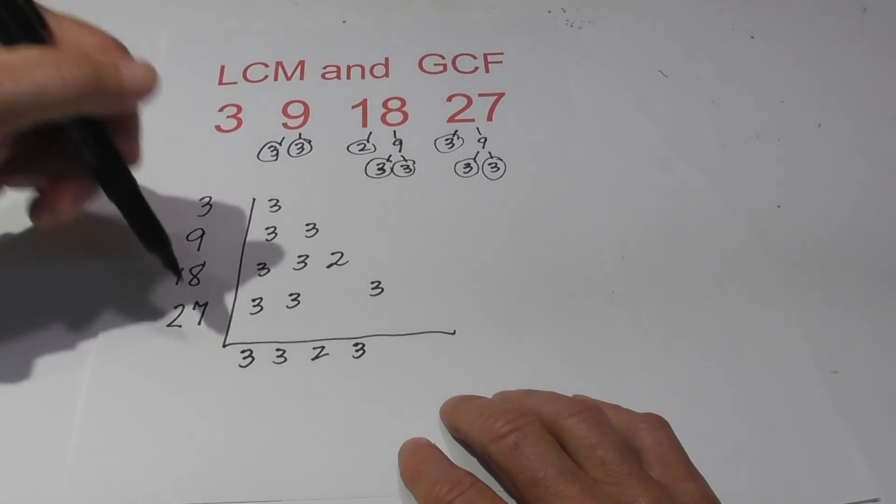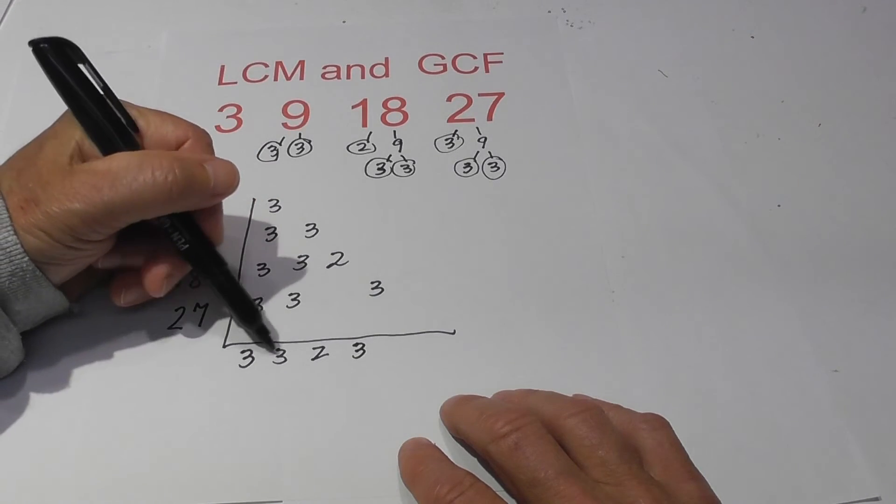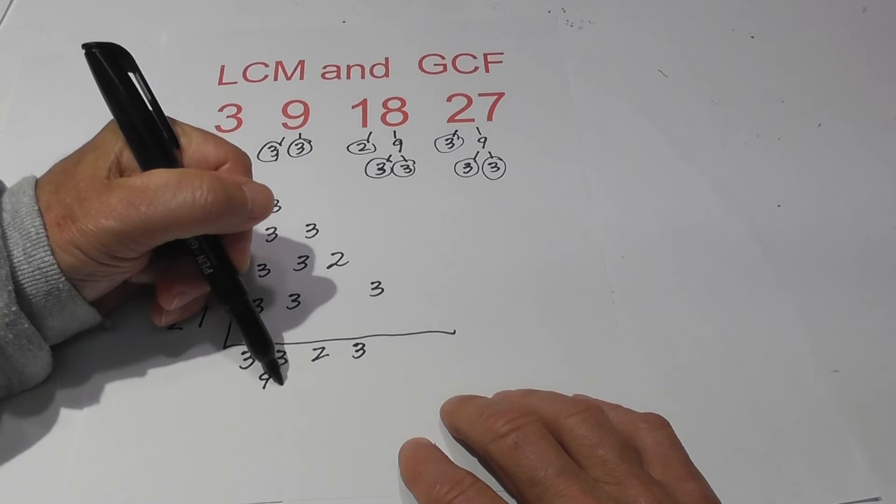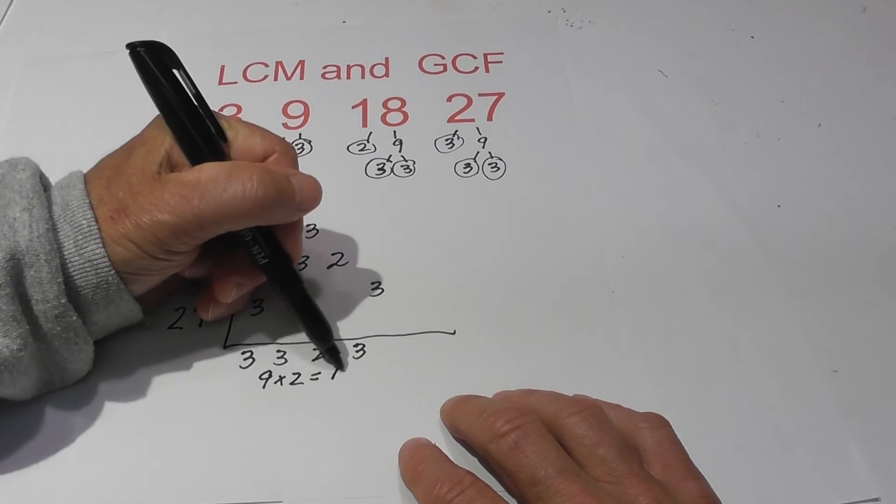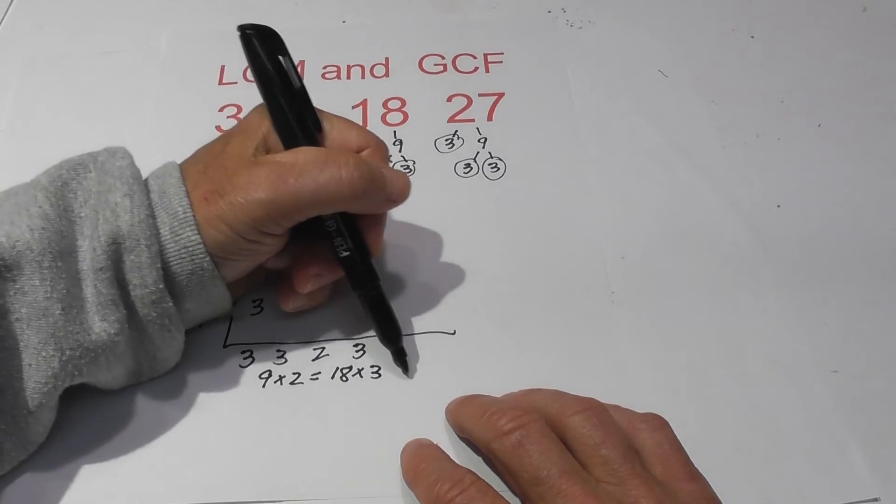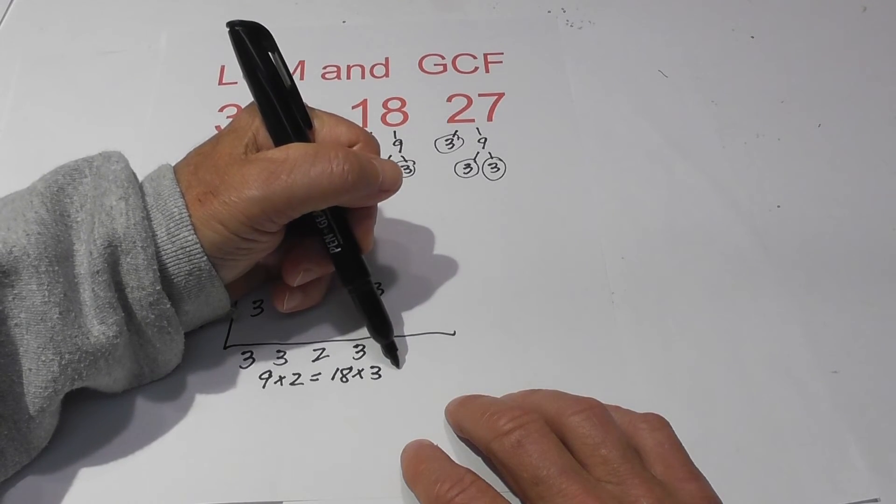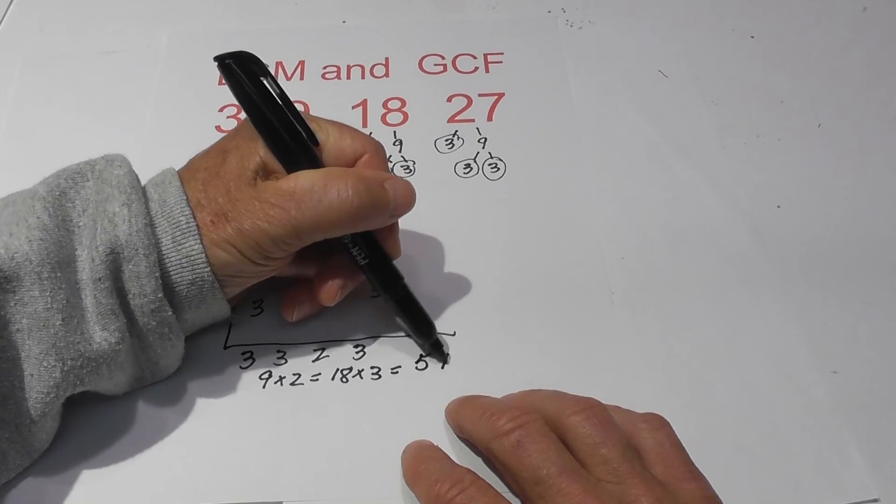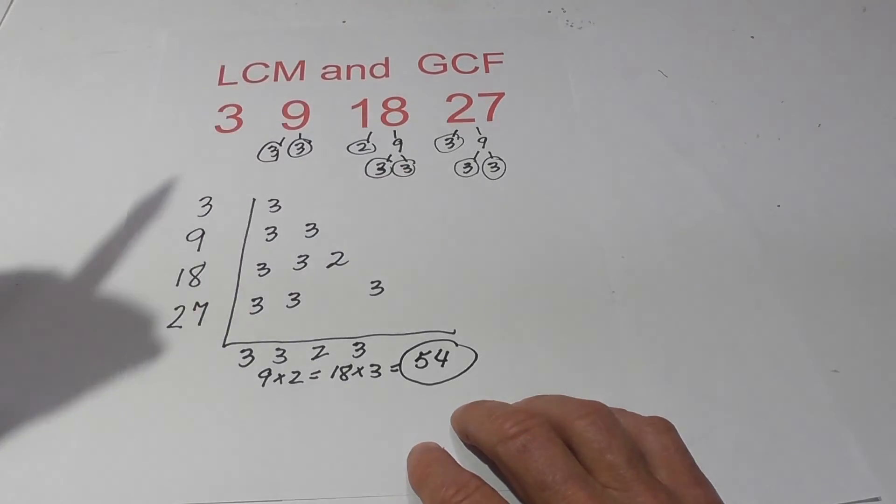So now, for the LCM, I just multiply these together. So three times three is nine, times two is eighteen, and then eighteen times three is eight, sixteen, twenty-four equals fifty-four. So the LCM is fifty-four.